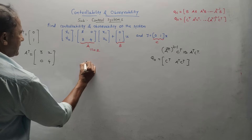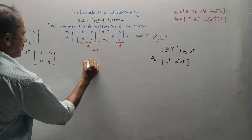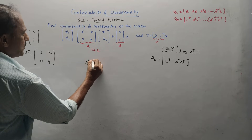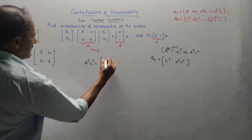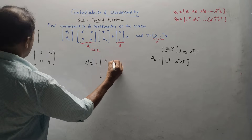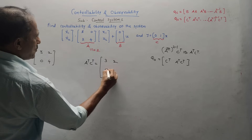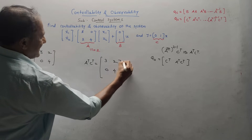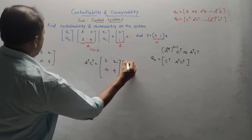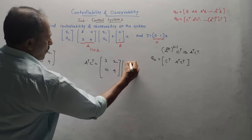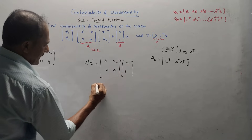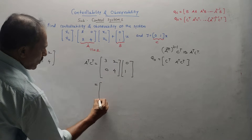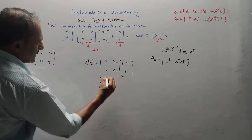Now look at the format: the first part is C transpose, which is available. Next, A transpose into C transpose — let us take the multiplication.